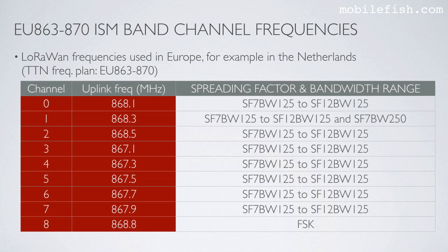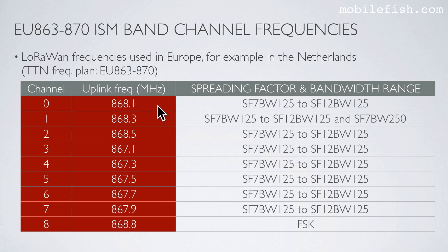In this table you will find the LoRaWAN frequencies used in Europe — for example, in the Netherlands. These uplink frequencies match the Things Network frequency plan EU 863 to 870 MHz. Channel 0 uses this uplink frequency, channel 1 uses this uplink frequency, channel 2 uses this uplink frequency, and so on. For each uplink frequency there is a corresponding spreading factor and bandwidth range.